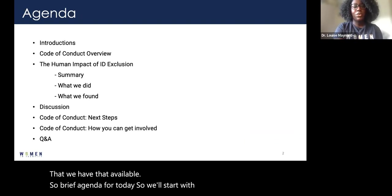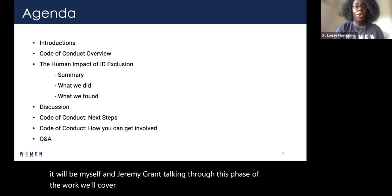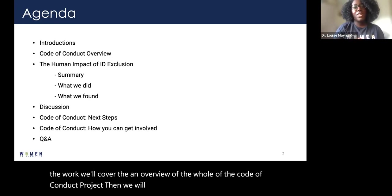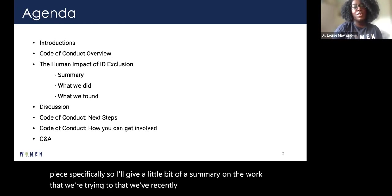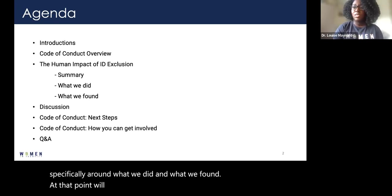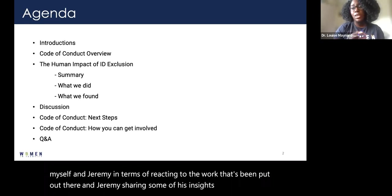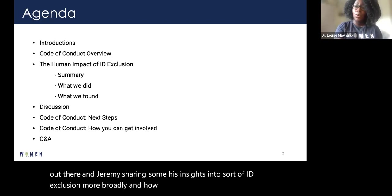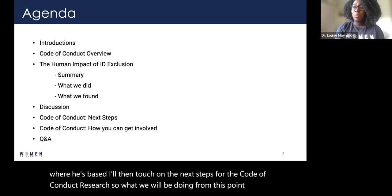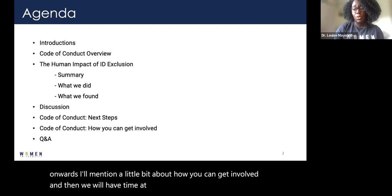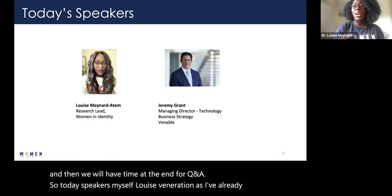So the brief agenda for today: we'll start with introductions — it'll be myself and Jeremy Grant talking through this phase of the work. We'll cover an overview of the whole code of conduct project, then deep dive into the human impact piece specifically. I'll give a summary of the work we've recently published, then move into a discussion between myself and Jeremy. I'll also touch on next steps for the research, how you can get involved, and then we'll have time at the end for Q&A. Today's speakers are myself and Jeremy Grant, who I'll let introduce himself.